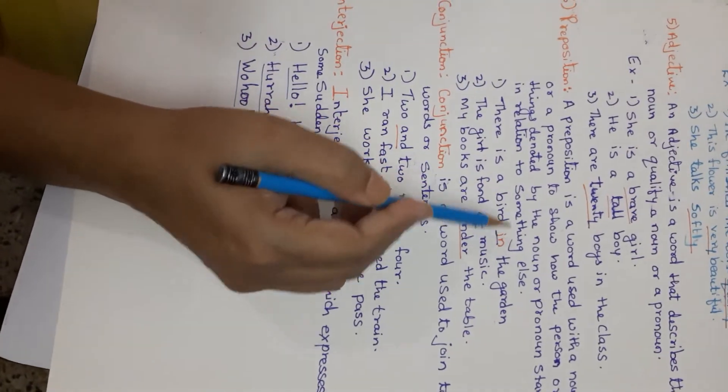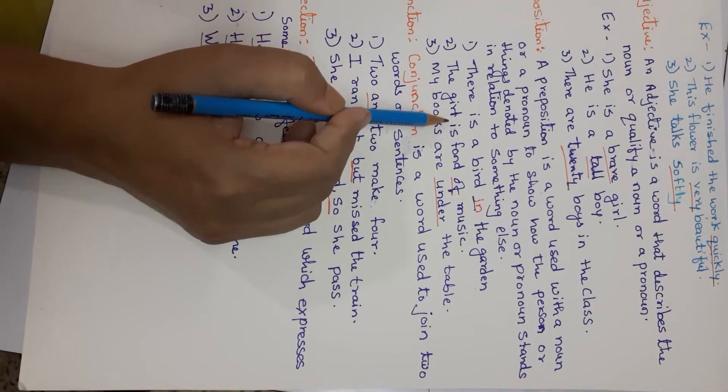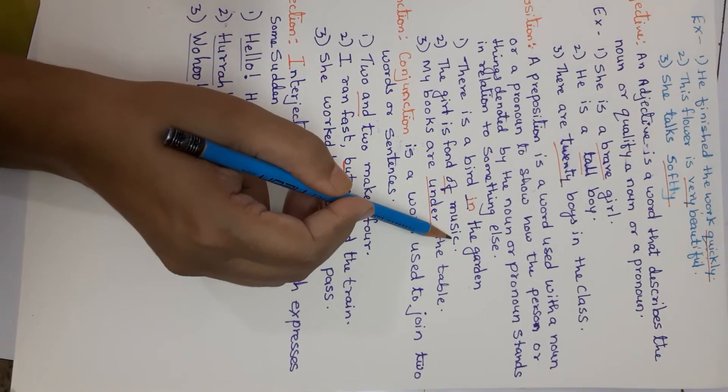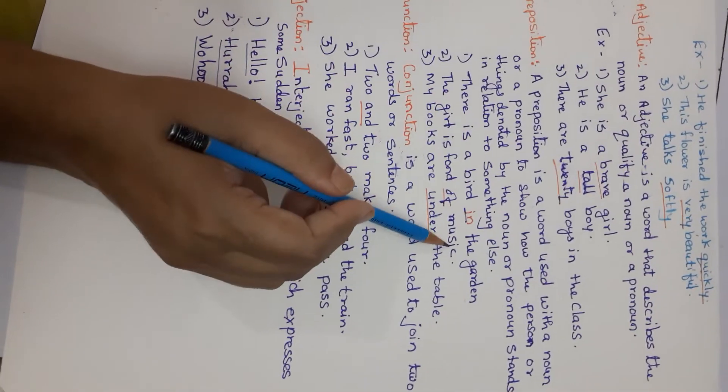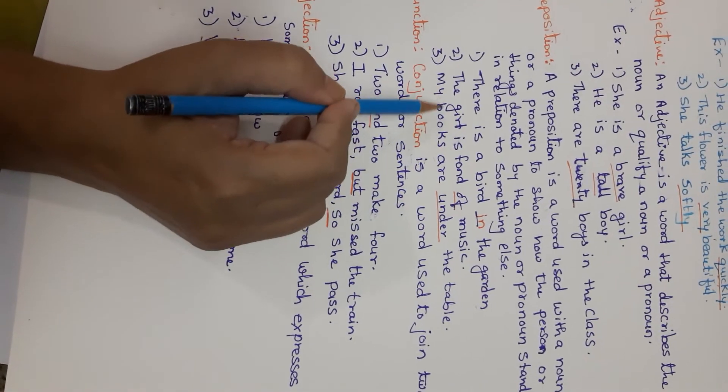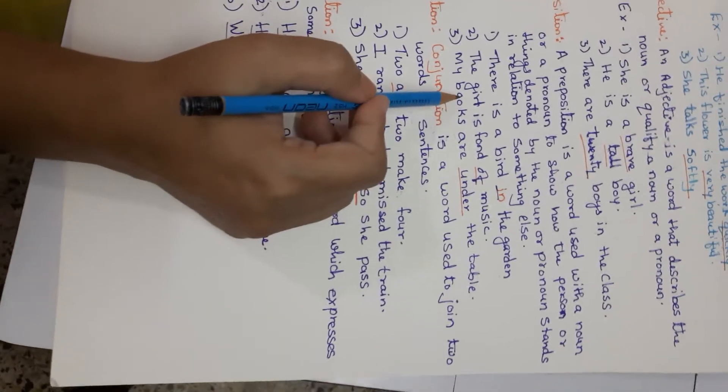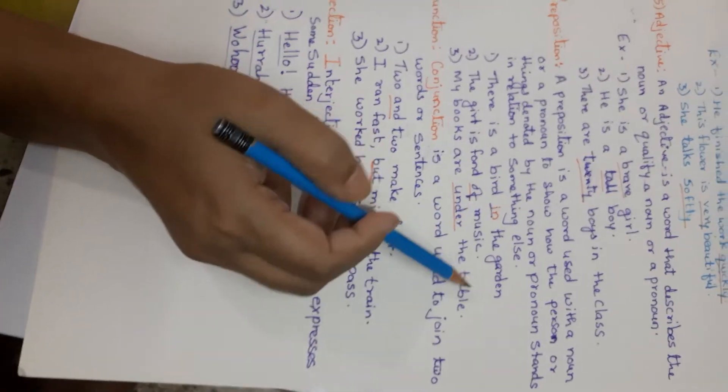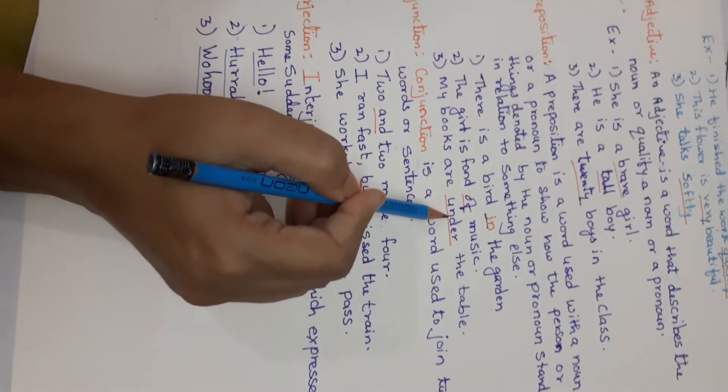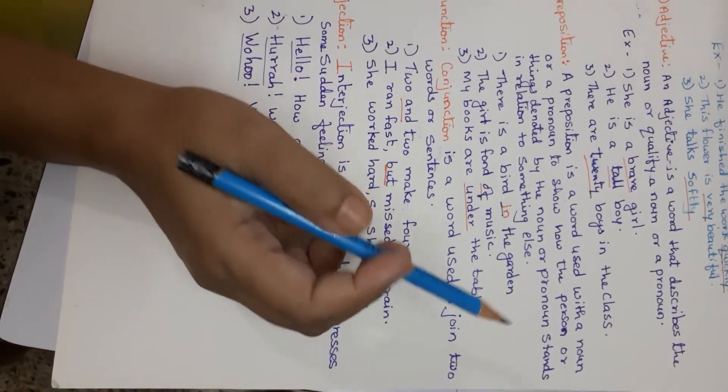Bird in the garden. So in. The girl is fond of music. Music and girl relation. Of. My books are under the table. Books are told. But where are they? Under the table. So this is preposition. In, of, under. These are all prepositions.